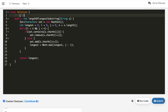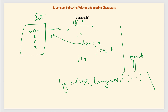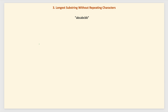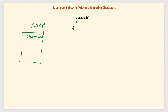Can we further optimize? Yes. Every time we find a duplicate character, we are incrementing i by 1 and removing one character at a time. Instead of a set, we will use a HashMap that maps each character to its index in the string. This way, when we find a duplicate, we can jump i directly past the previous occurrence.